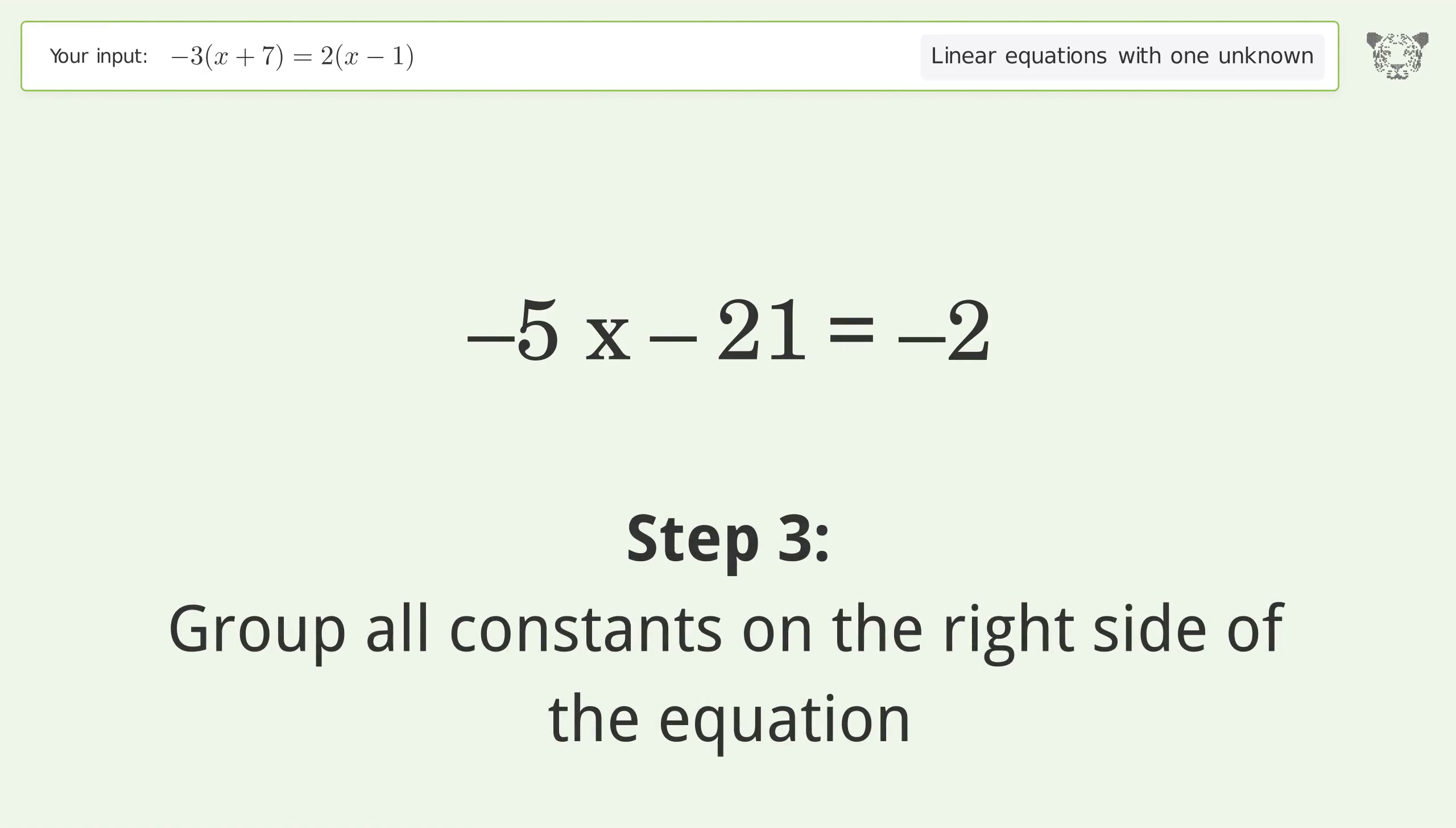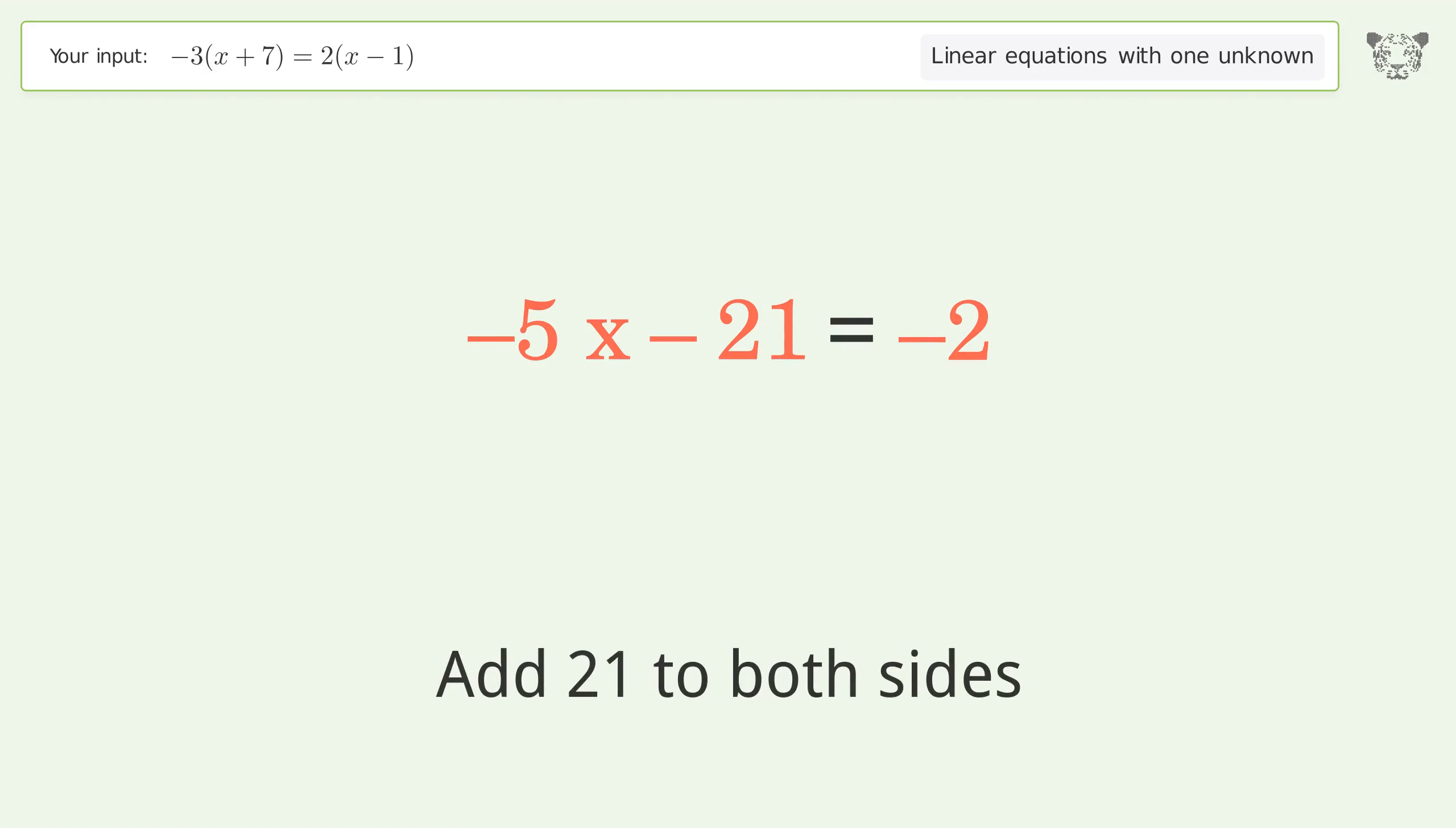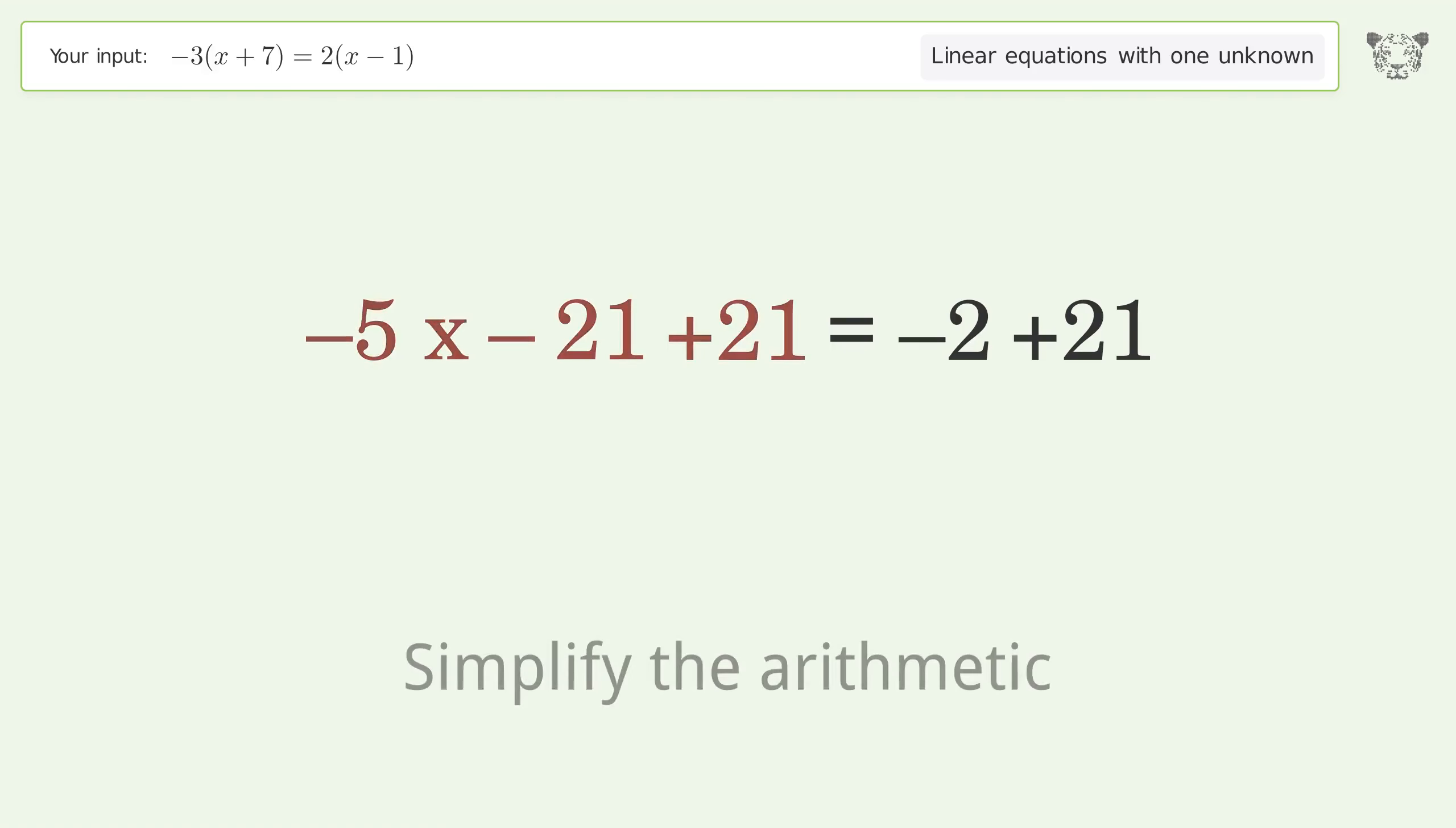Group all constants on the right side of the equation. Add 21 to both sides. Simplify the arithmetic.